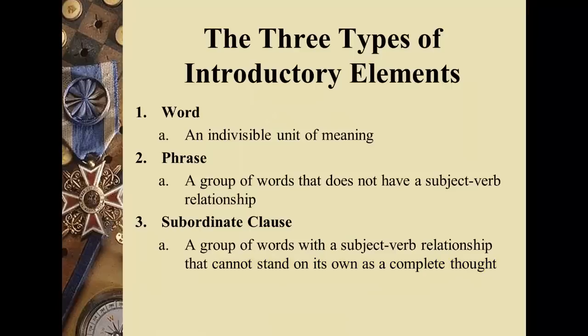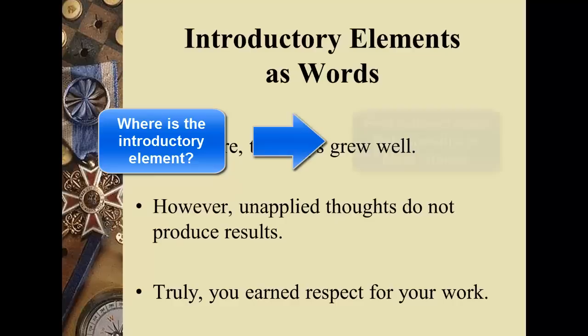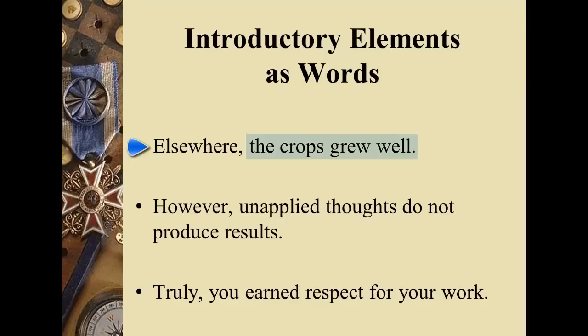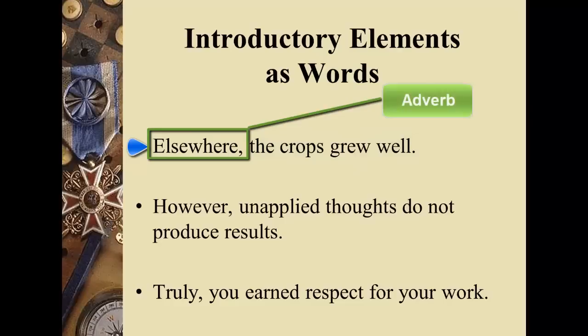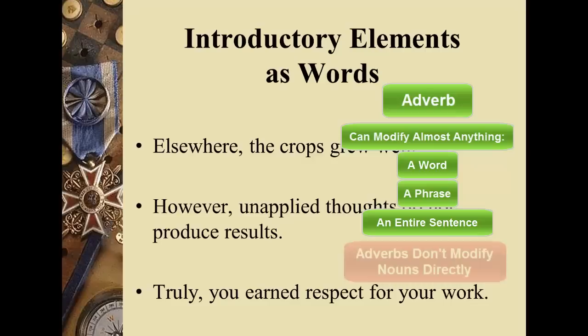Here we have introductory elements as words. One of the easiest ways to find where the introductory element is and to place a comma immediately after it is to find the subject-verb relationship in a main clause that stands on its own as a complete thought. In the first example, 'Elsewhere, the crops grew well' — 'the crops grew well' is a main clause, a grammatically correct sentence. 'Elsewhere' is an adverb that indicates place. Adverbs modify practically anything — another word, another phrase, or even a sentence — but they don't directly modify nouns. That's what adjectives are for. So 'elsewhere, the crops grew well' makes perfect sense.